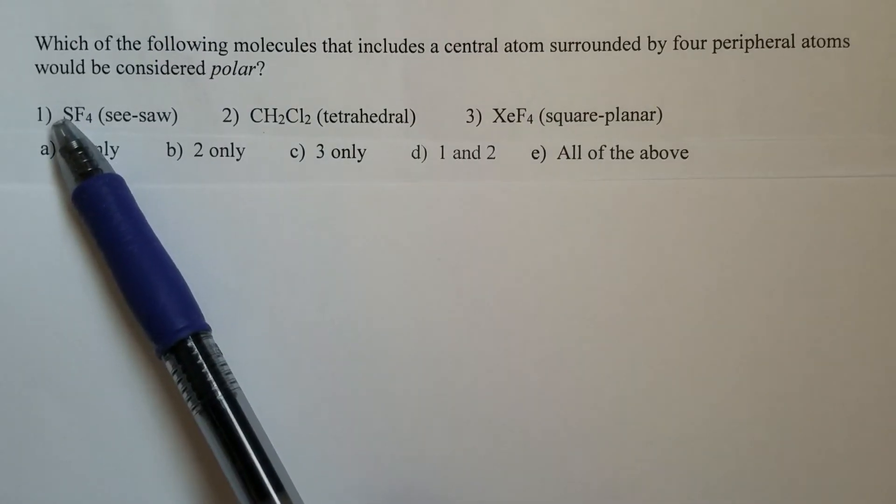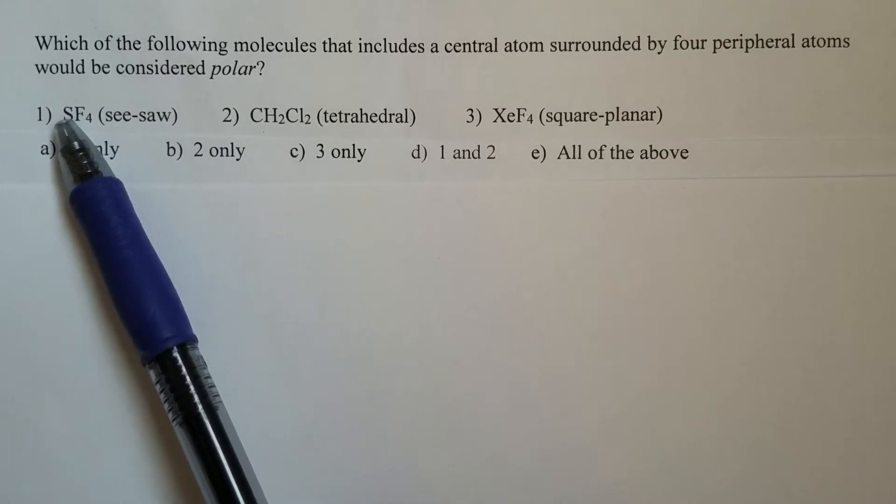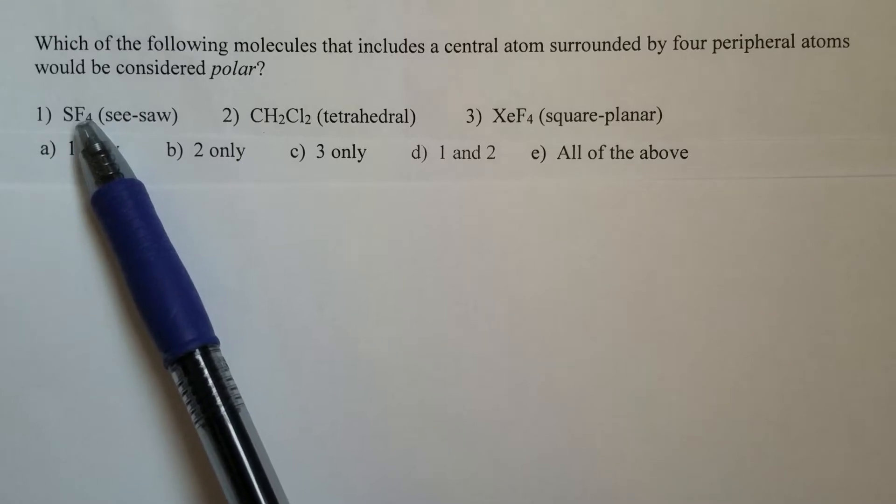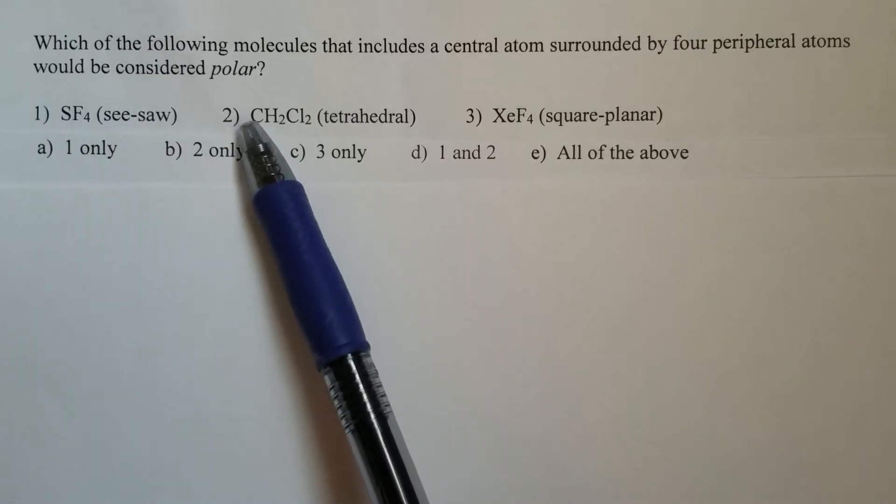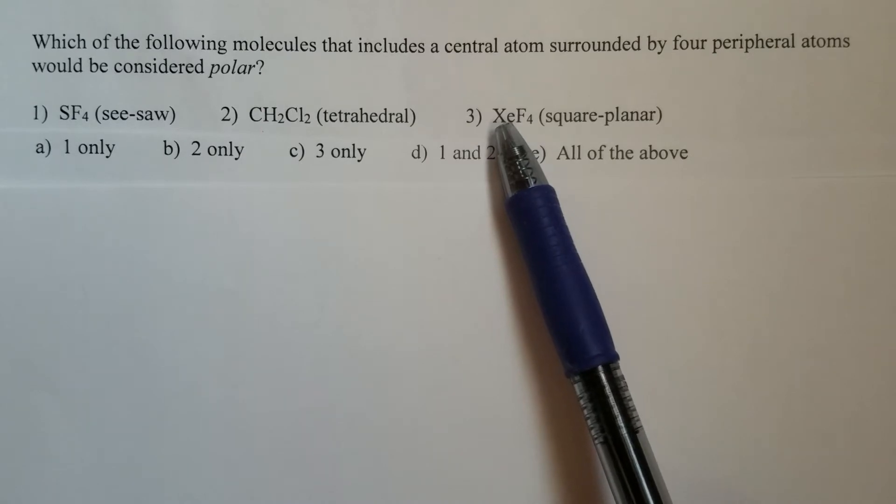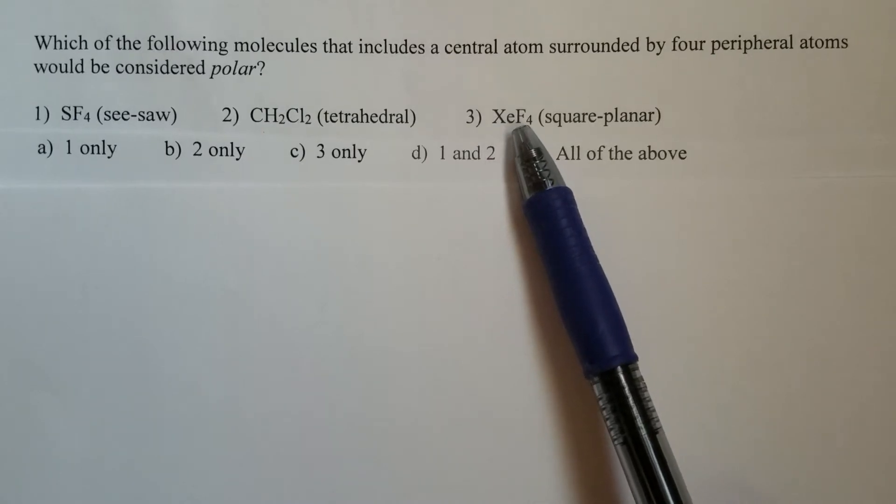One central atom - in the first one that's sulfur, and then four fluorine surrounding atoms. Here we have carbon as a central atom. Here we have xenon as a central atom surrounded by four fluorine atoms.